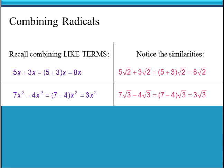Here's a similar one with subtraction. If we have 7x squared minus 4x squared, since they're both x squared terms the variable portion is exactly the same, we can combine them with subtraction by subtracting the coefficients: 7 minus 4, and we end up with 3x squared. It's like we have 7x squareds and we take away 4x squareds, leaving a total of 3x squareds.